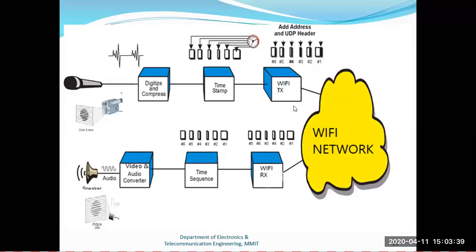This is the basic block diagram of Wi-Fi TV. Wi-Fi TV is a television system where we use a Wi-Fi module for transmission and reception of video signal. Here you can see that we are given audio and video. This is the camera - these two are sensors. We are capturing video through the camera and audio through the mic.